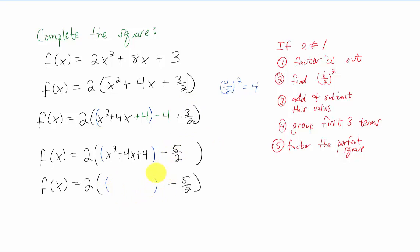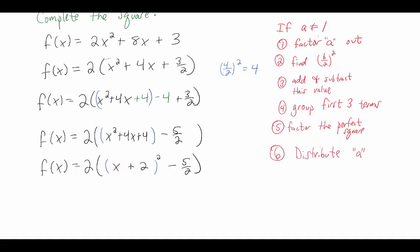Now these first three terms are again a perfect square. In this case, that perfect square is x plus 2, the quantity squared. And the last step in completing the square, if we have an a value that is not 1, is to distribute this a through those last set of parentheses.